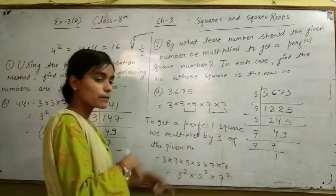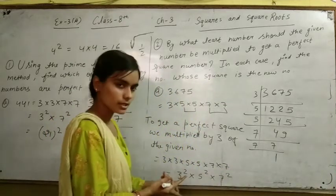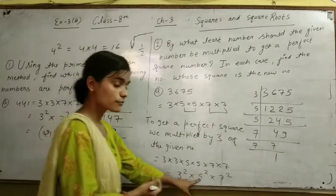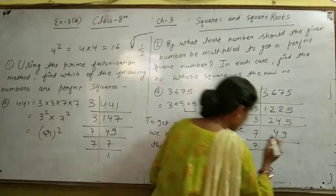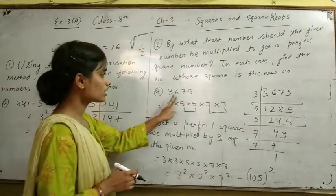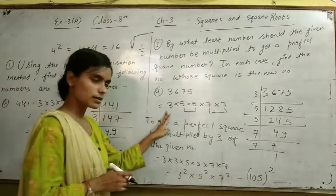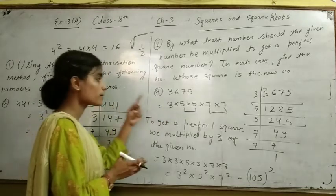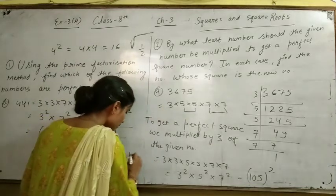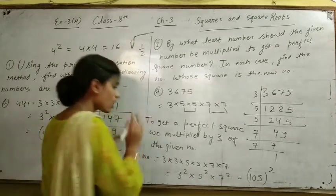Now, if the pairs are equal then we multiply: 3 times 5 times 7 equals 105. We have to understand that 3675 is not a perfect square, but we have multiplied by 3 and we have a new number.